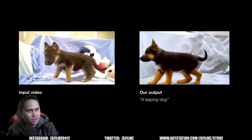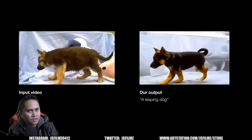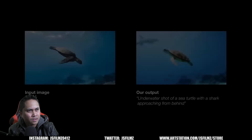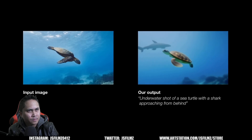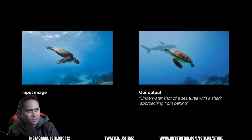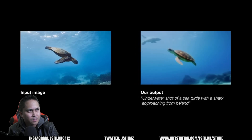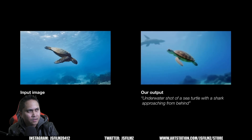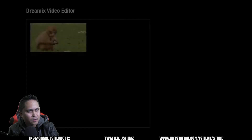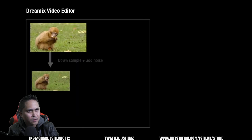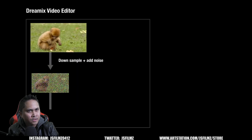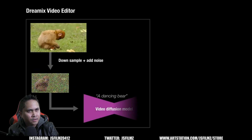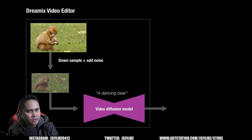They also show how their general-purpose video editor can be used for prompt-based image animation, creating a video from a still image. The method in Dreamix adapts text-to-video models for video editing. To do so, they corrupt the video with severe downscaling and noise addition, then process it with the video diffusion model guided by the textual prompt.